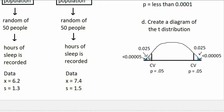The p-value is split in half: one half is at the left end of the distribution and one half is at the right end.